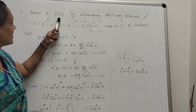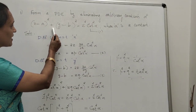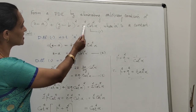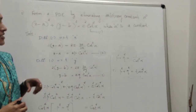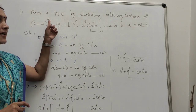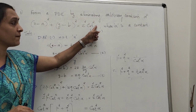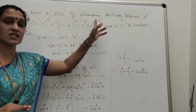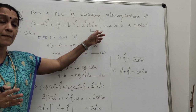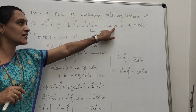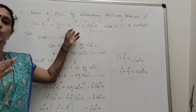Form a PDE by eliminating the arbitrary constants of (x - a)² + (y - b)² = z² · cot²α, where α is a constant. At a glance we may think there are three arbitrary constants: a, b, and α. But α is specified as a constant, so the arbitrary constants are only a and b.